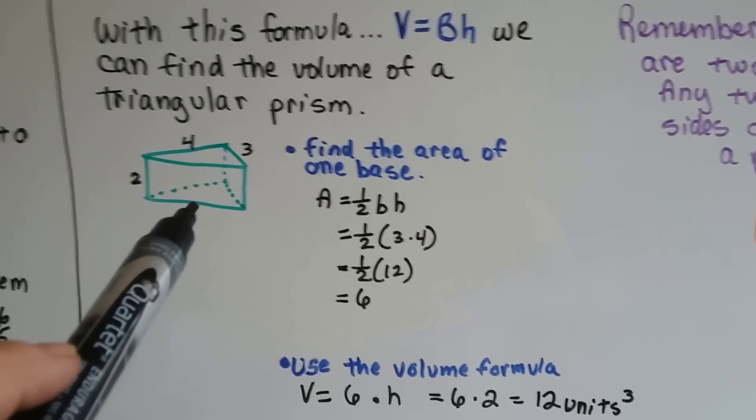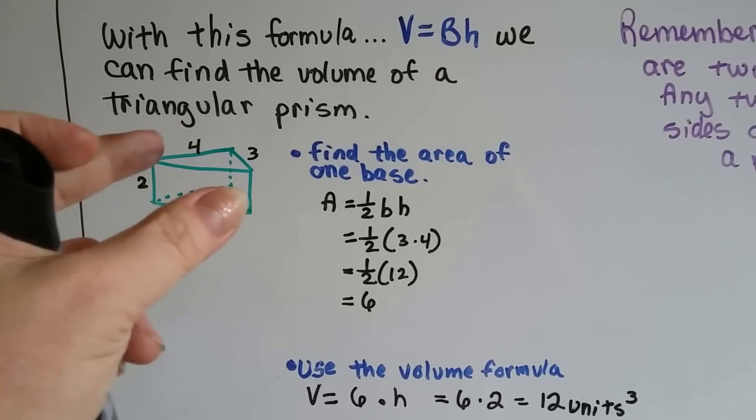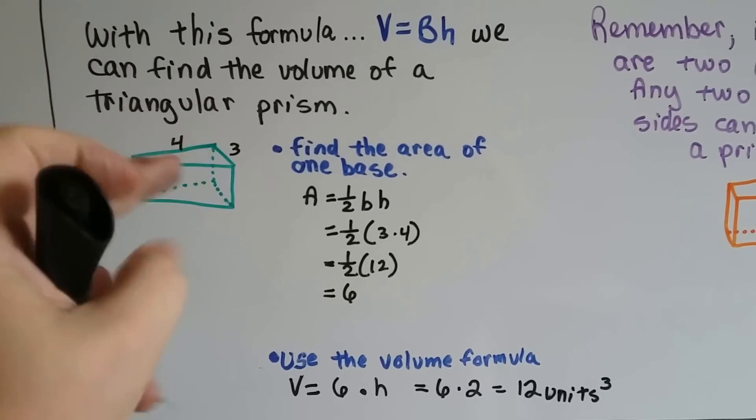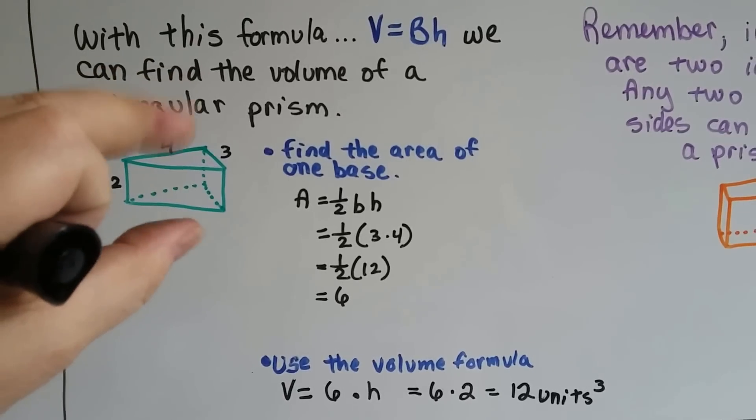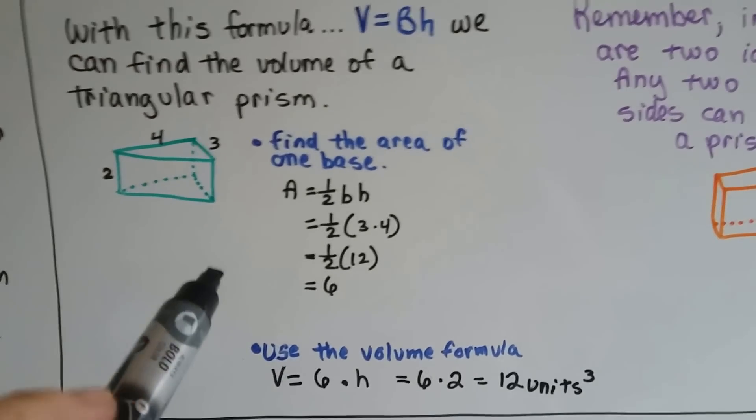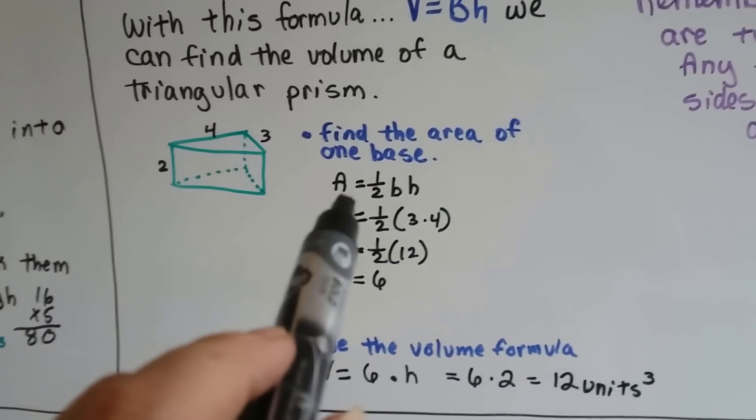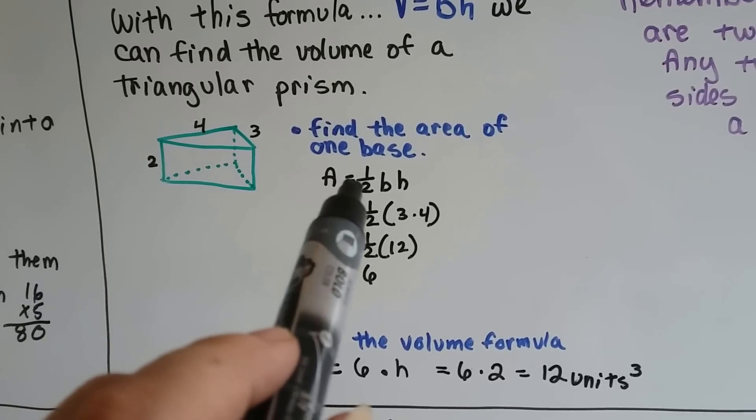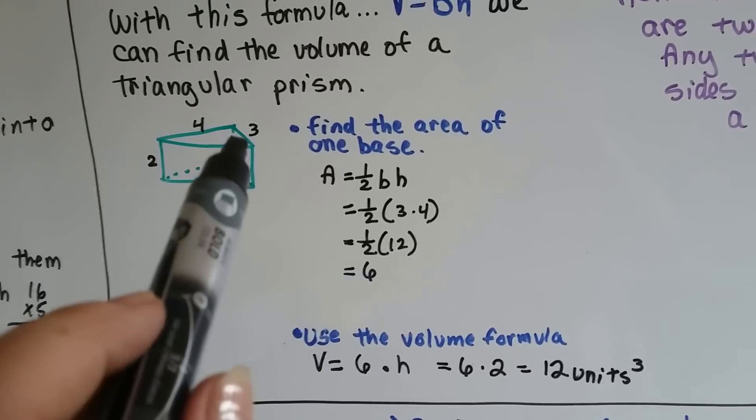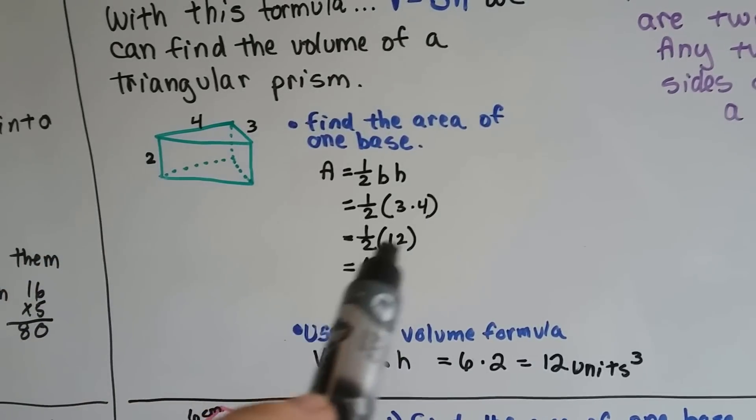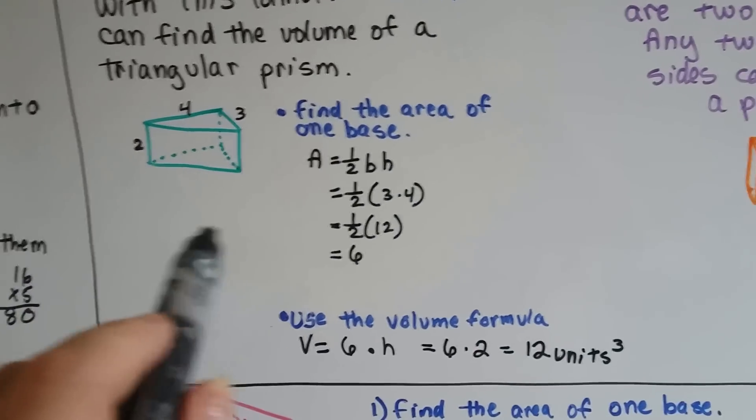For this triangular prism with an equilateral triangle, we'll use the top and bottom as the bases. First, we find the area of one base. We use the area formula for a triangle: A = ½·b·h. With base 3 and height 4, we get ½ times 12, which is 6. So our first layer is 6.